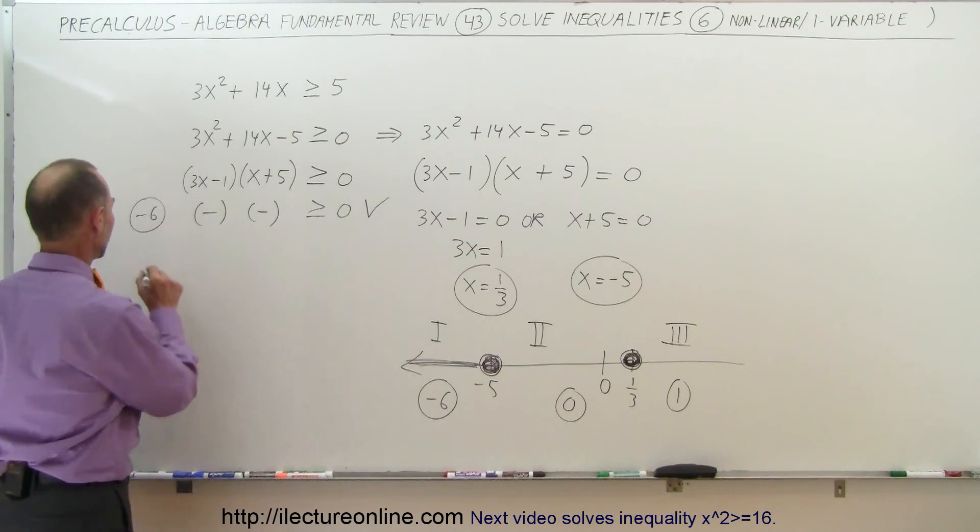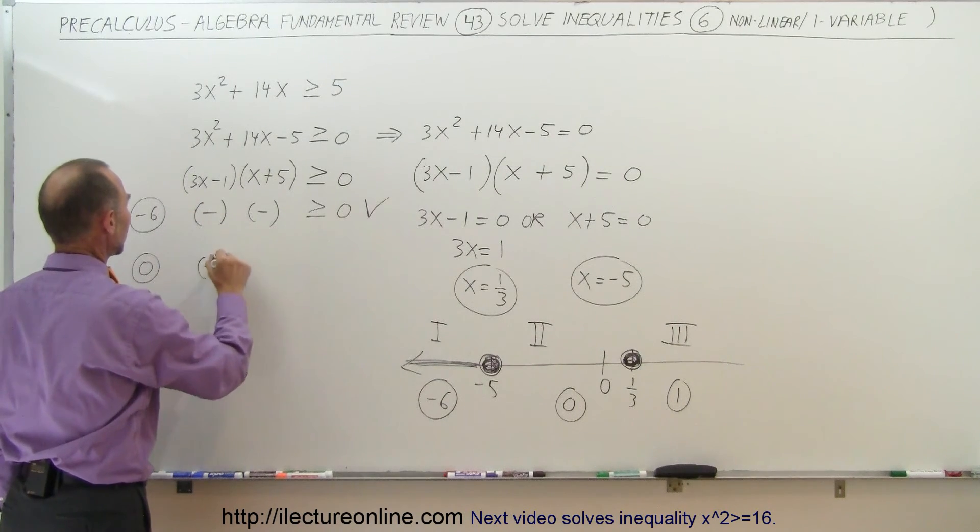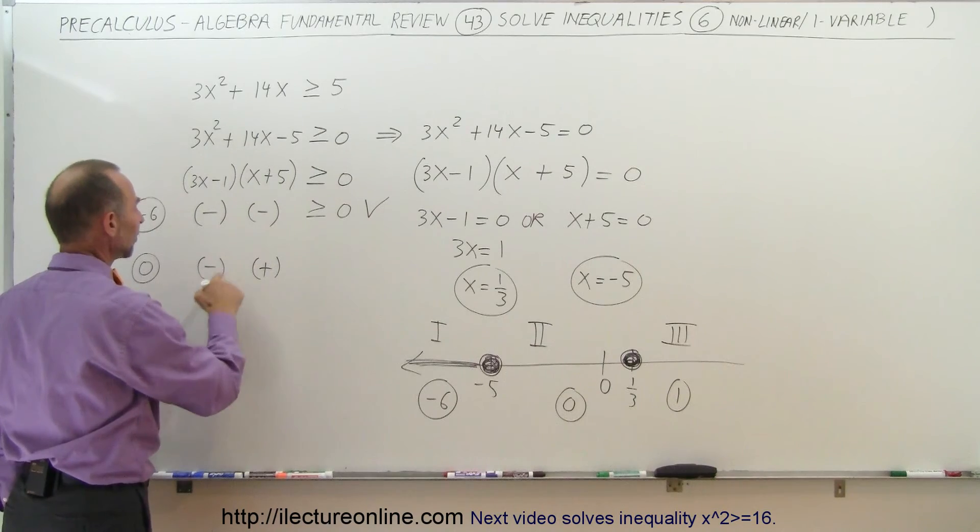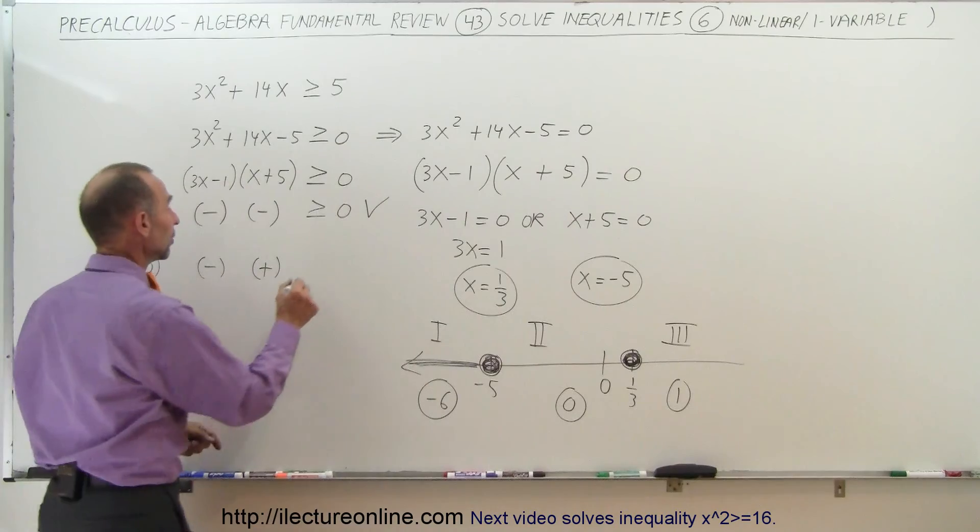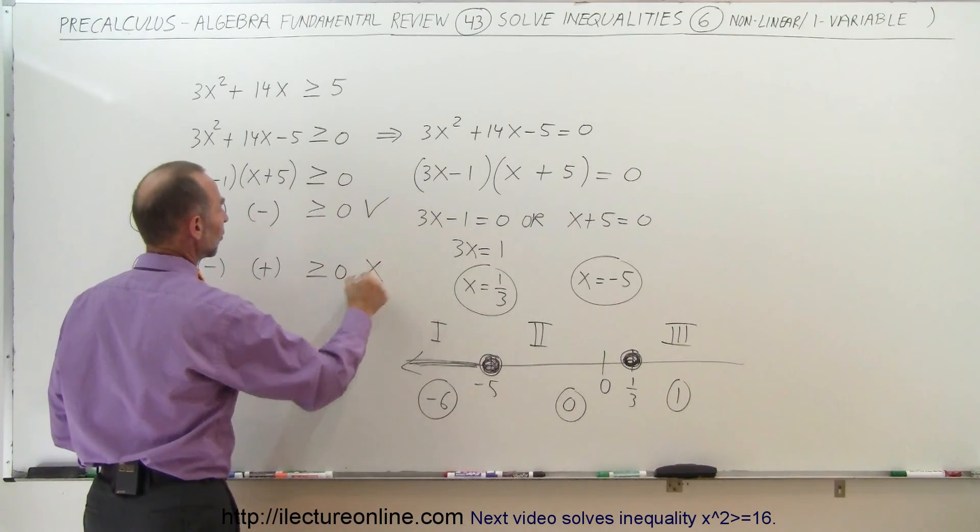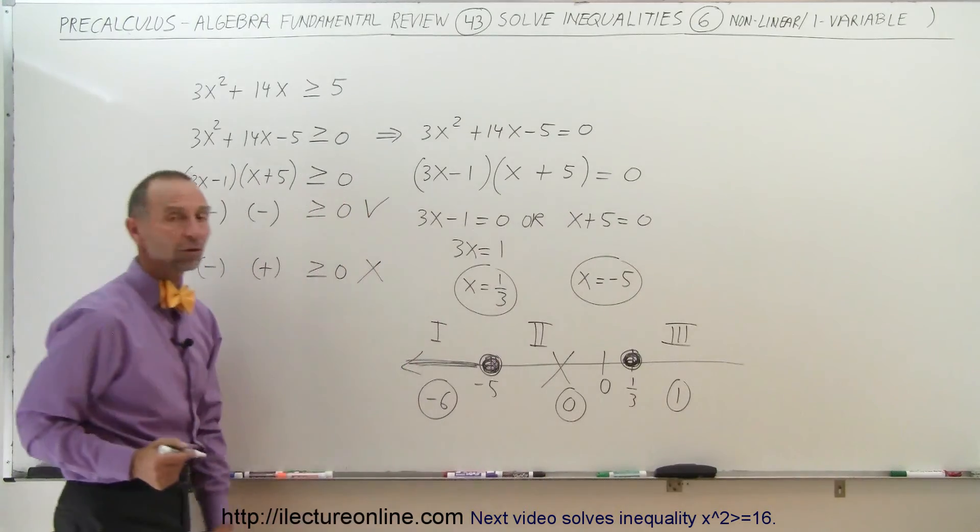Let's try our second point, 0. Plug 0 in here, 0 minus 1, that's a negative quantity. Plug in 0 here, 0 plus 5 is a positive quantity. A negative times a positive quantity gives me a negative quantity. Negative quantity is never greater or equal to 0, so therefore this does not satisfy the inequality. The middle region is not part of my solution.